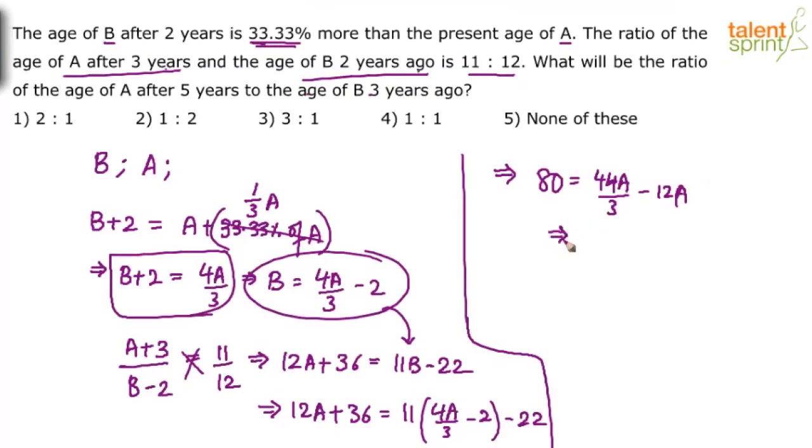If A is 30, what is B? Substitute A back here. So what is B? B will be 4 into 30 by 3. 40 minus 2, 38. B is equal to 38. Done. We know both B and A now.